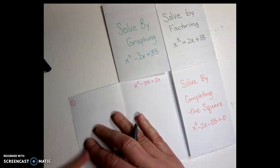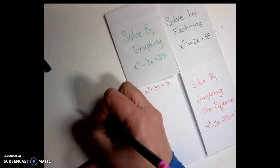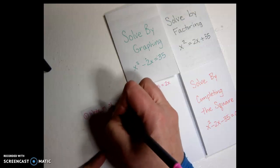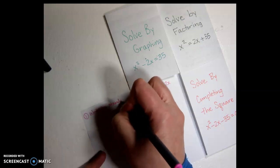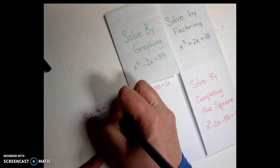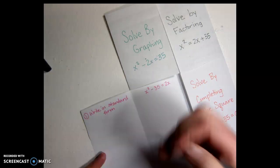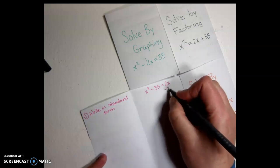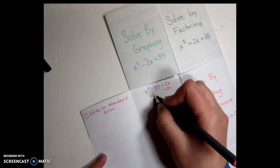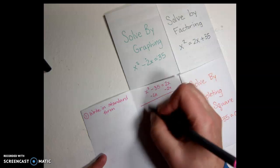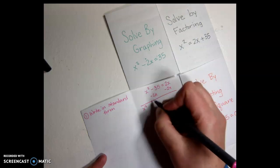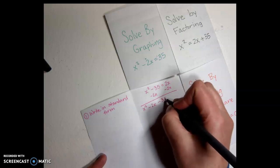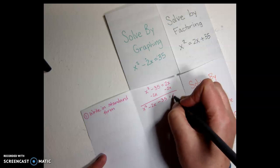So the first thing we want to do is write in standard form. With the quadratic formula, for standard form we don't want this to be equal to 2x, we want it to be equal to 0. So I'm going to subtract 2x from both sides. And then standard form, we write the biggest exponent first. So we'd write x squared first, and then the minus 2x, and then the constant term last. So it looks like it's in standard form, equal to 0.